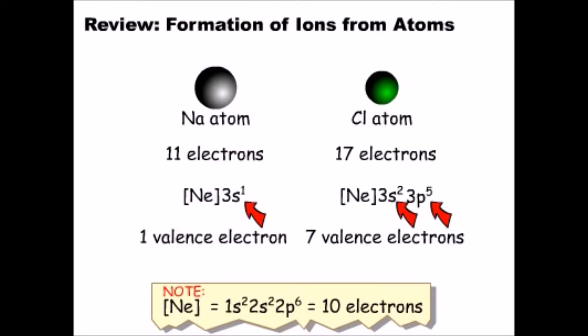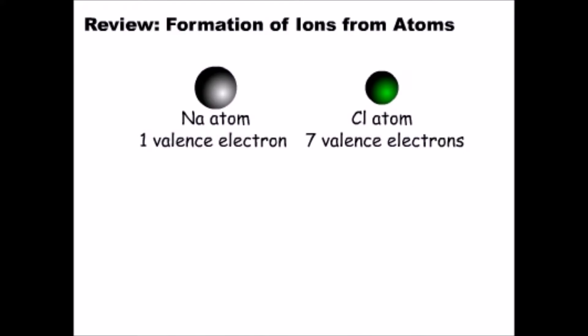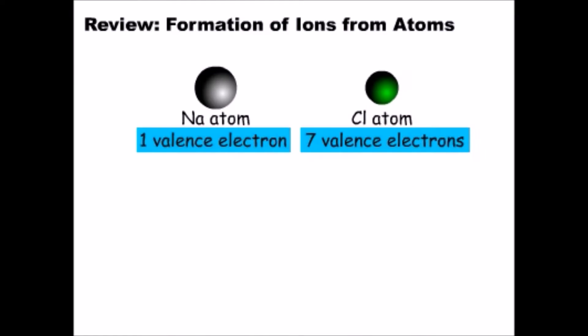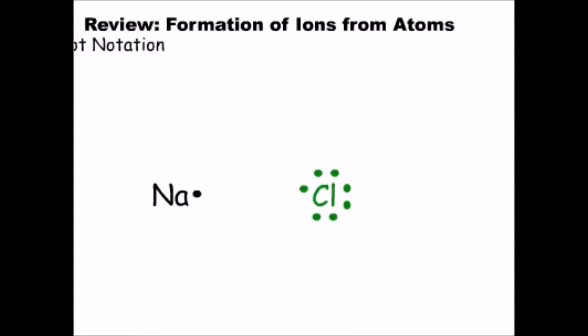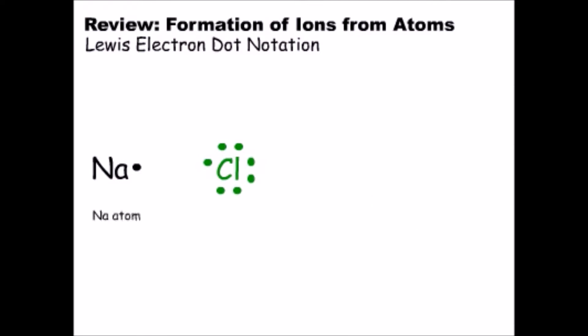Let's write the Lewis dot structure for each atom. We only have to worry about the electrons in the valence shell, since we know that these are the ones that react. We put one dot next to the symbol for sodium, and we put seven dots around the symbol for chlorine. We can use the Lewis electron dot notation for the sodium and chlorine atoms to see how the ions are formed. Sodium's single valence electron is transferred to the chlorine, producing a sodium ion and a chloride ion.